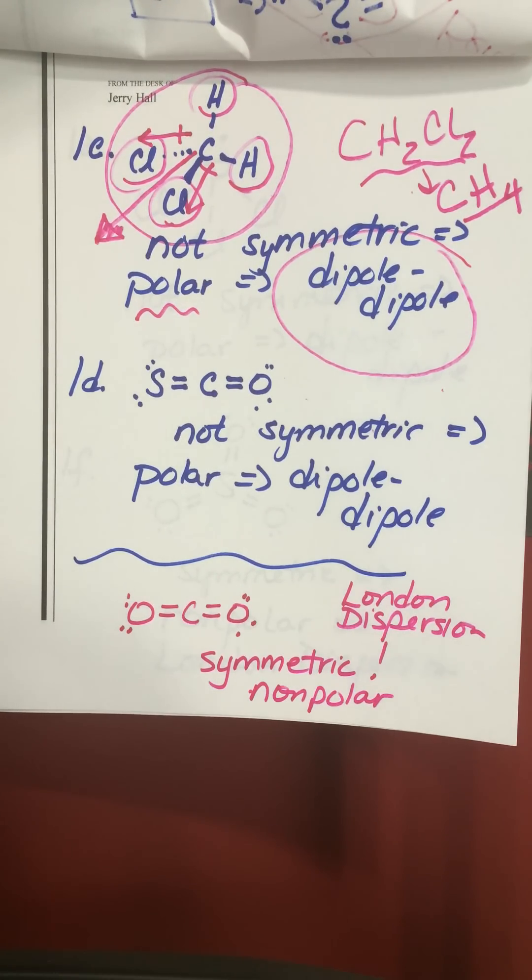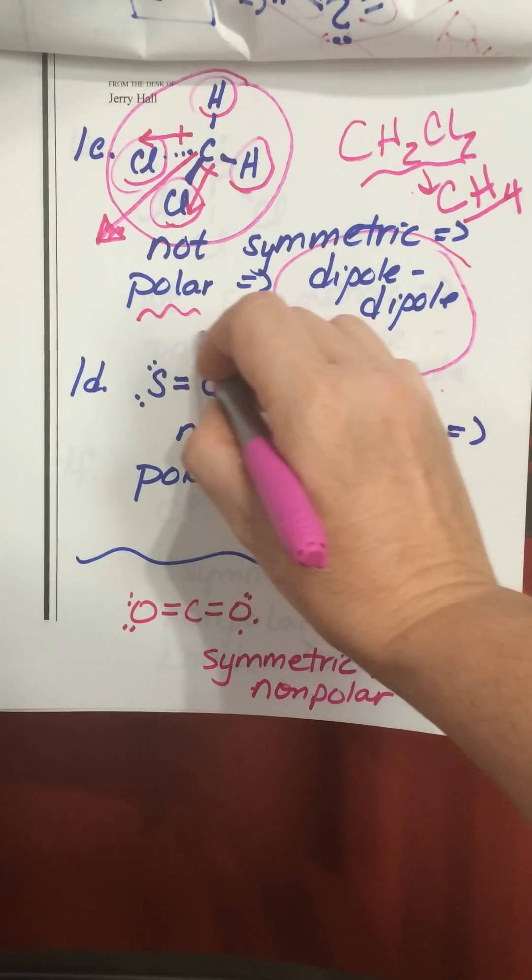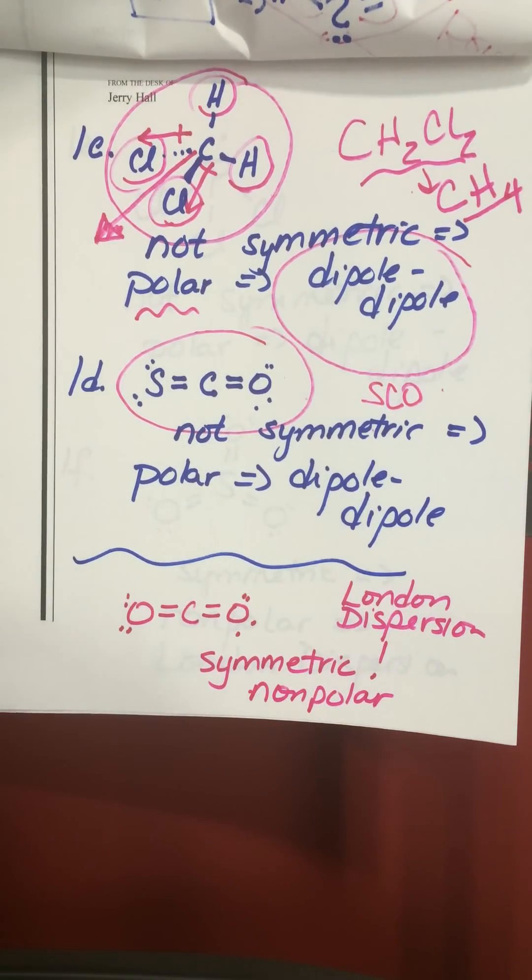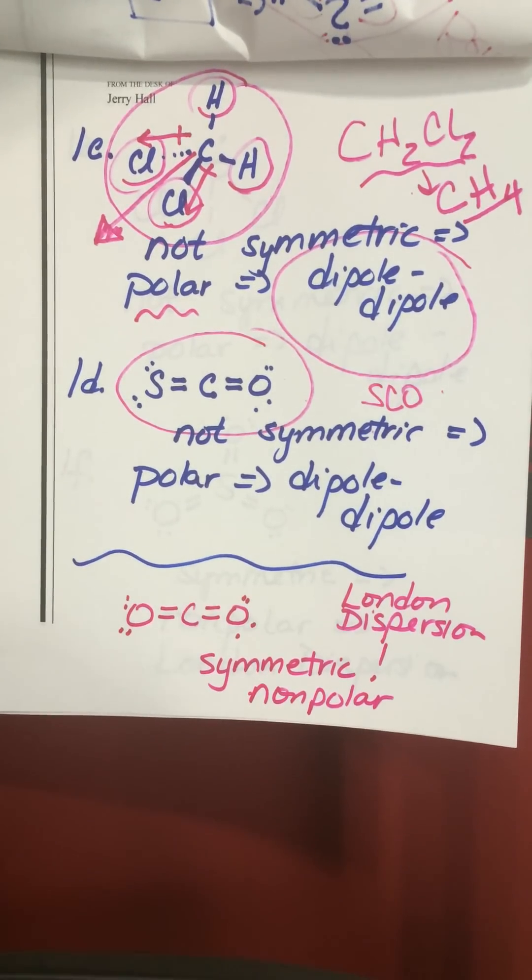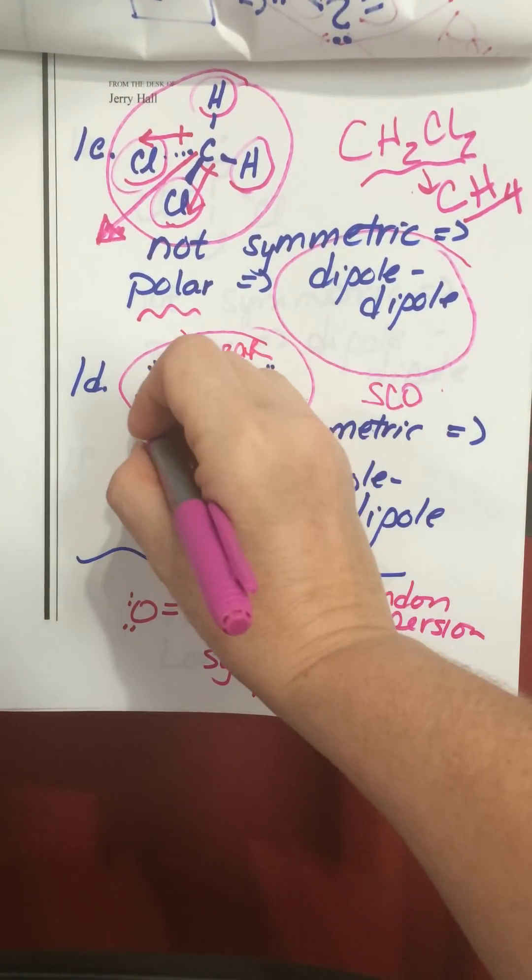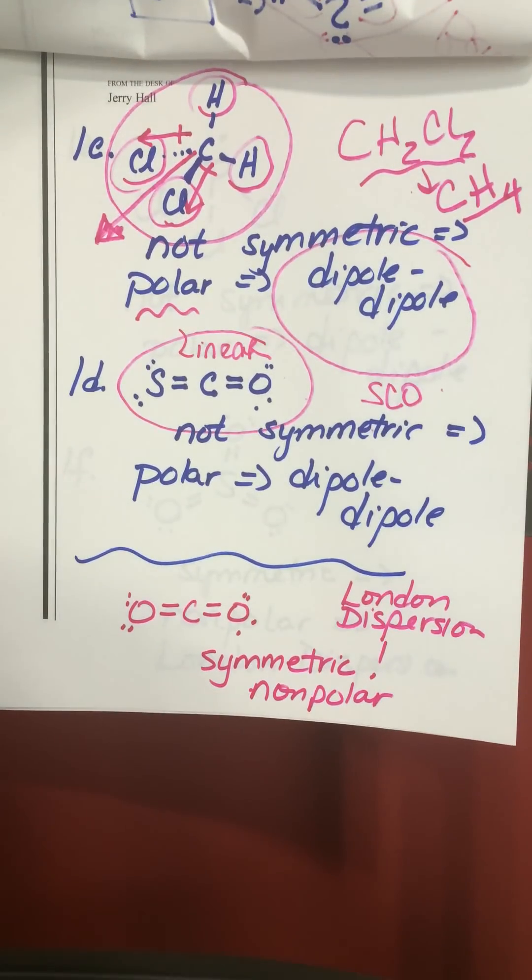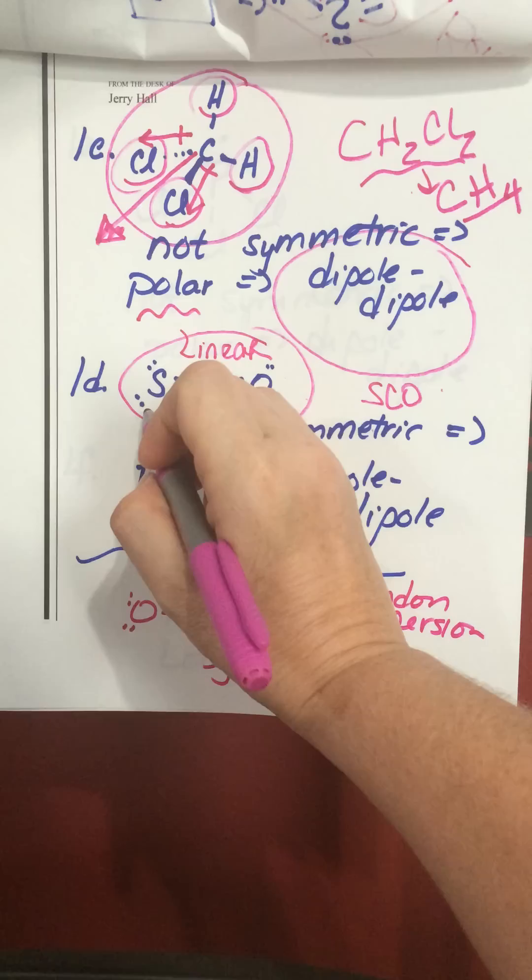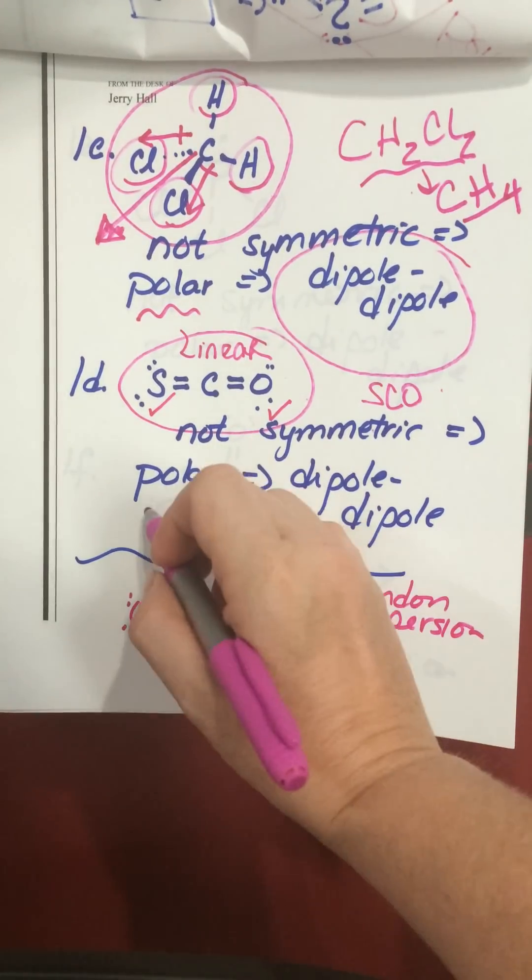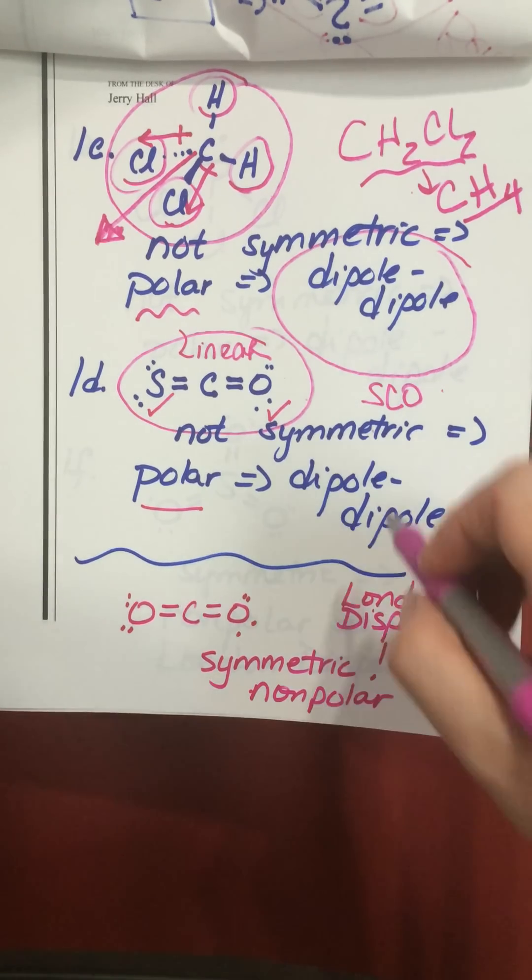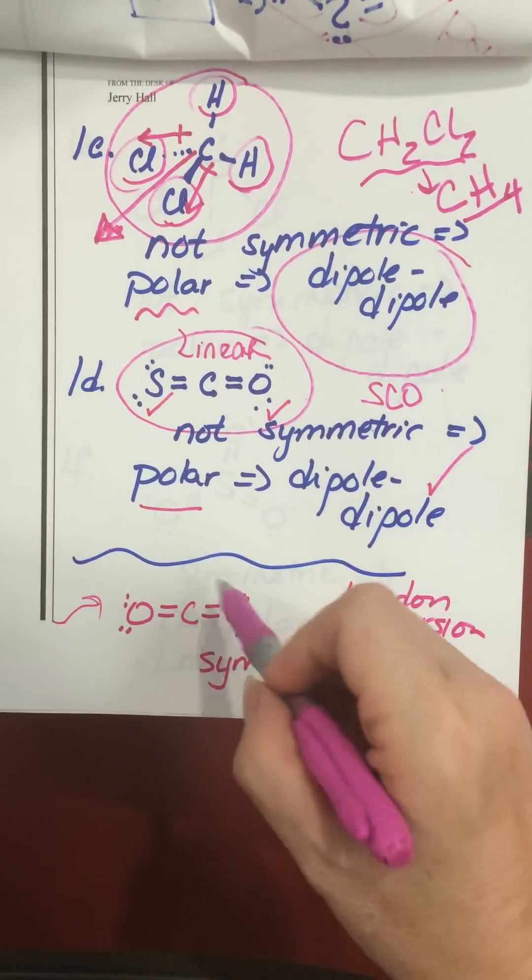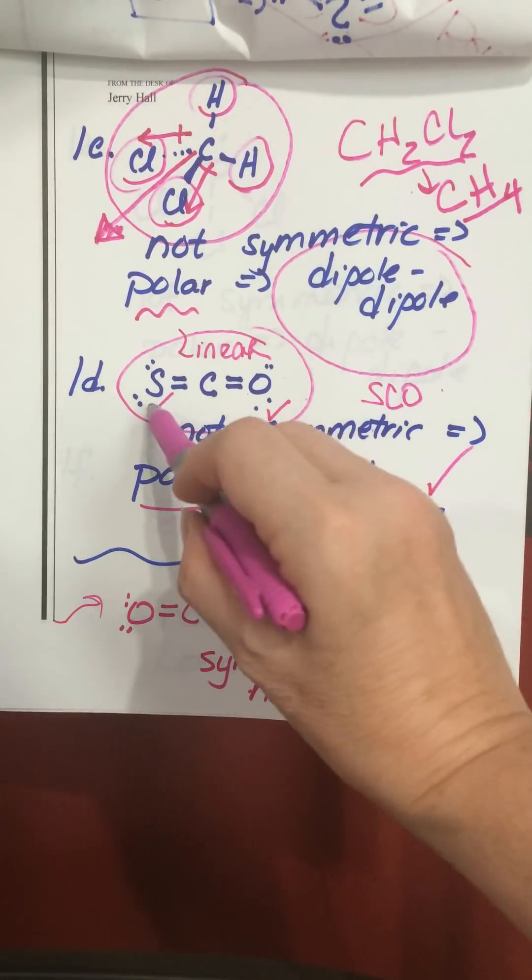The next one is very interesting. The formula given is SCO, kind of looks like carbon dioxide. The shape of this is linear. Now linear, if the outside atoms were identical, would be symmetric. But in this case, you have two different atoms on the ends, an oxygen and a sulfur. So it is not symmetric, therefore it is polar. There are no hydrogens, so the main intermolecular force is dipole-dipole.